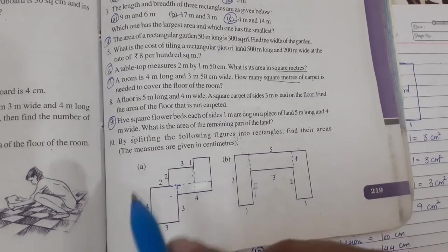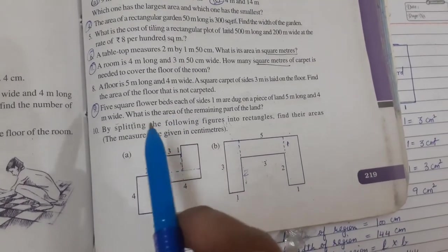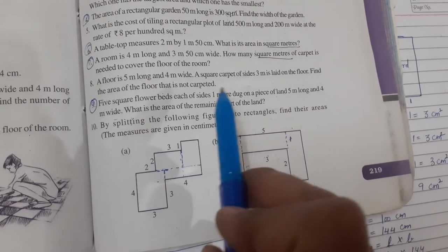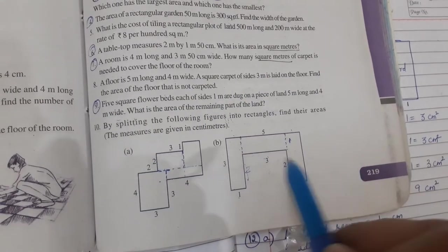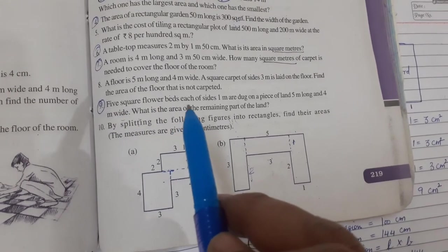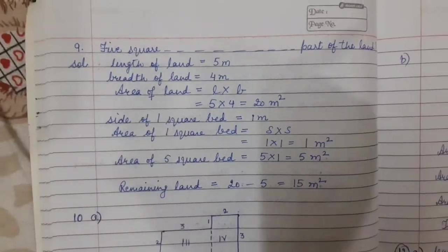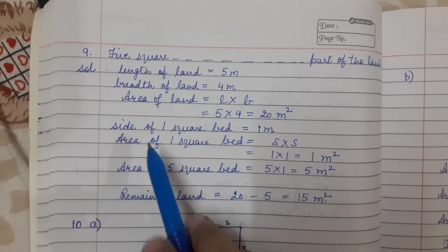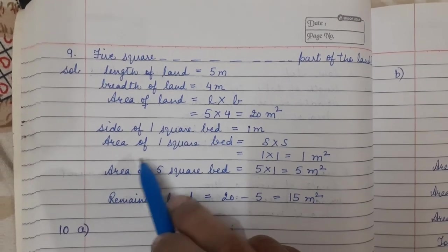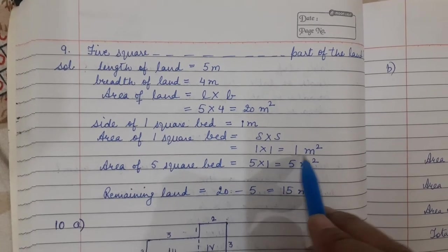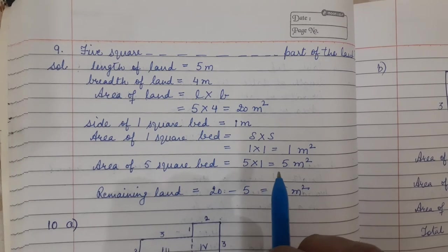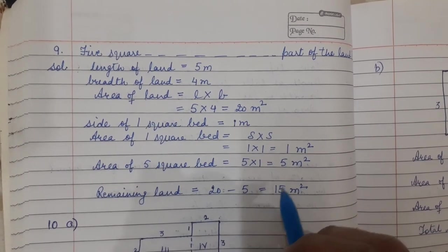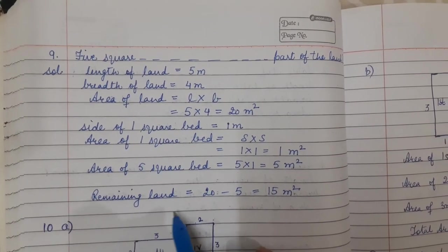If you subtract the carpet area from the floor area, you will get your answer. For the next part: length of land is 5m, breadth of land is 4m, area of land is 20 square meters. Side of one square bed is 1m. Area of one square bed is 1 × 1 = 1 square meter. Area of 5 square beds is 5 × 1 = 5 square meters. Subtract this from the total land area: 20 minus 5 = 15 square meters.